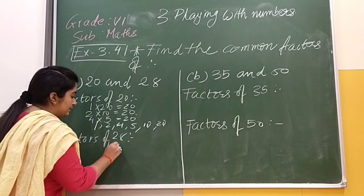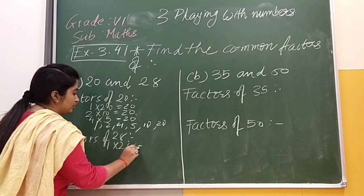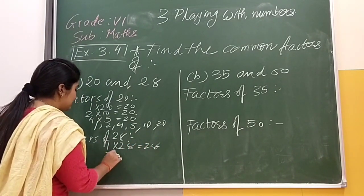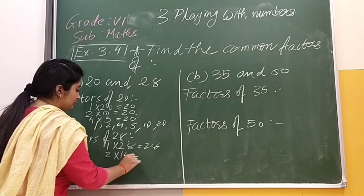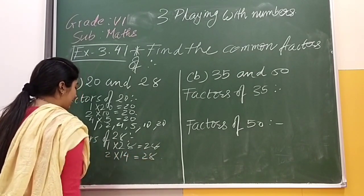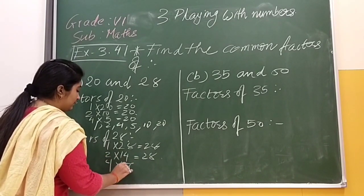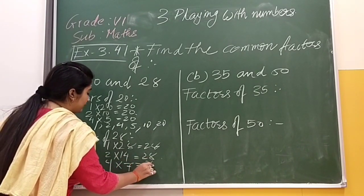28 factors can we not be able to find? By U method, 1 into 28 is 28. Then 2 into 14 is 28. Then what can we find? 4 into 7. 3 cannot be able to find. 4 into 7 is 28. This factors can we find?